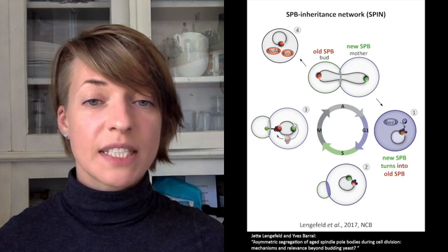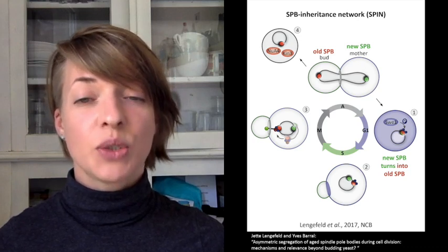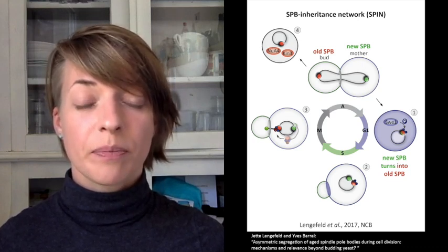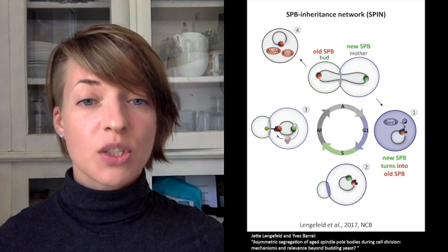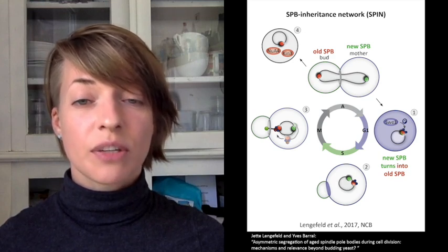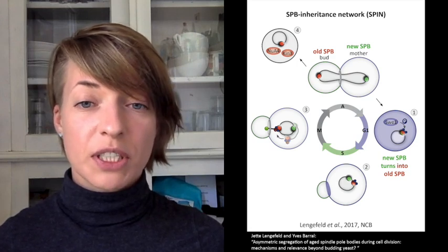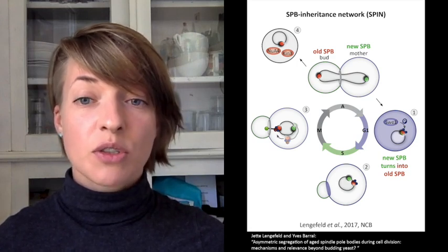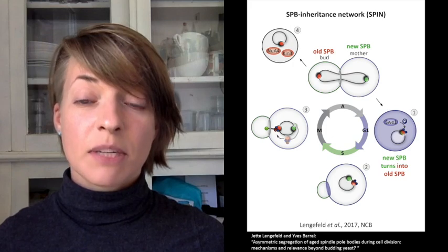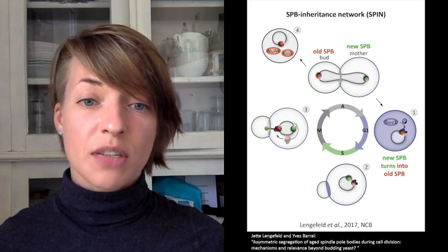The maintenance of the spindle body's identity thereafter relies on NuA4 and KIN3. Thus, the SPIN sorts spindle bodies according to their history. Since SPIN components are conserved in metazoans, it is tempting to speculate that SPIN is similarly specifying metazoan centrosomes as well.